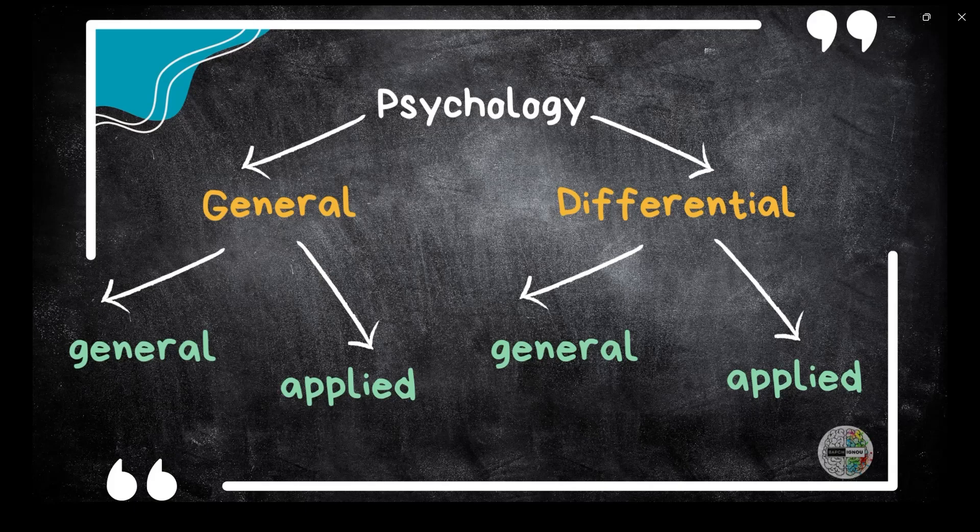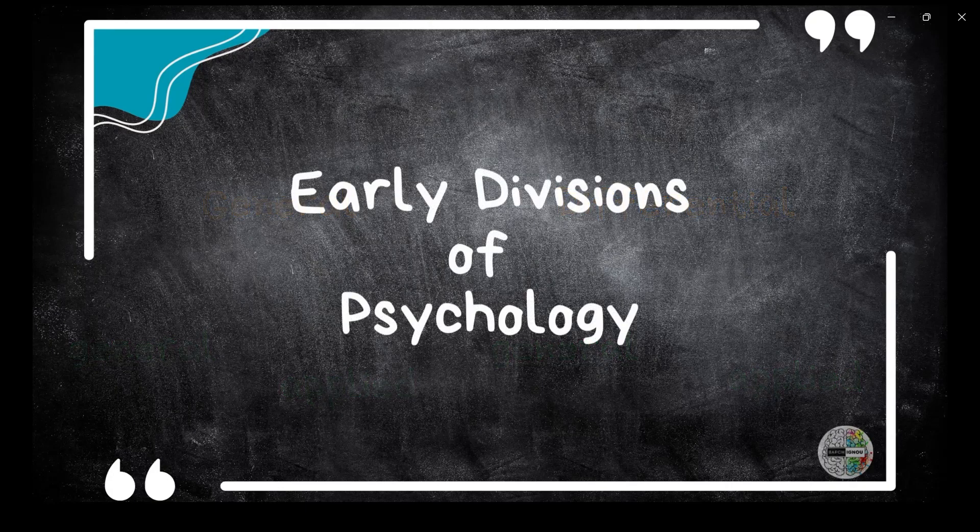Remember the example we studied last time — put 10 people in the same room but everyone will behave differently? That is individual differences. Gradually, both branches developed into further general and applied segments for each category, giving us an overall idea of the nature of psychology. Moving on to early divisions of psychology.